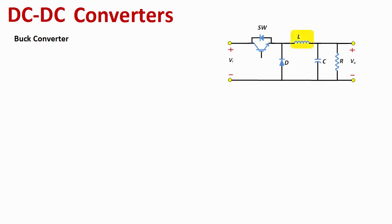The second component in the circuit is an inductor, whose objective is to smooth the current. We also have the typical load for a DC converter: a capacitor and a resistor, which draws current from the circuit. Additionally, to guarantee that the current is continuous, we use a diode, shown here in the circuit.